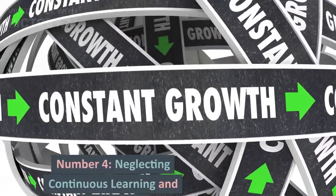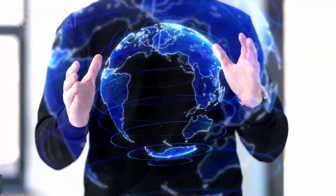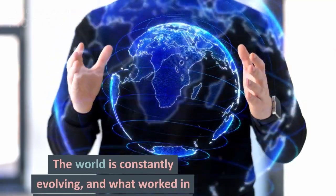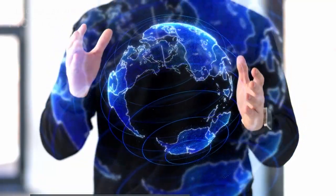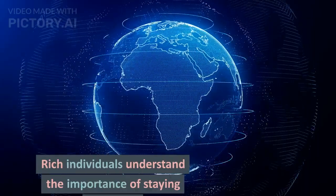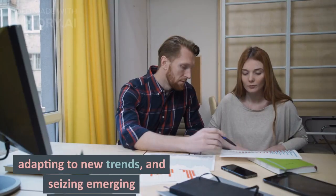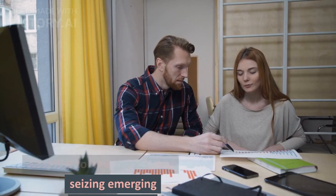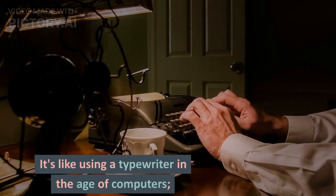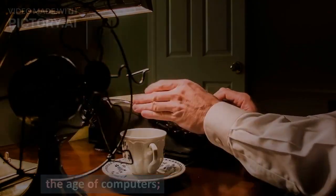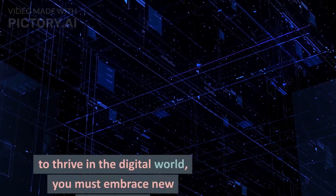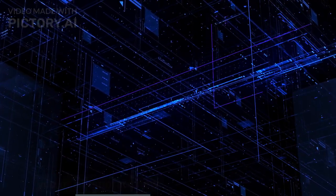Number 4: Neglecting continuous learning and adaptation. The world is constantly evolving, and what worked in the past may not work in the future. Rich individuals understand the importance of staying informed, adapting to new trends, and seizing emerging opportunities. It's like using a typewriter in the age of computers—to thrive in the digital world, you must embrace new technology.